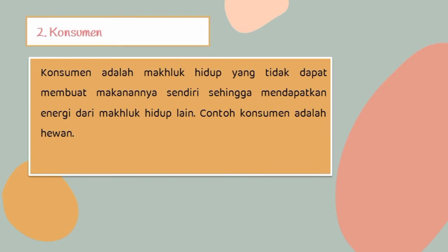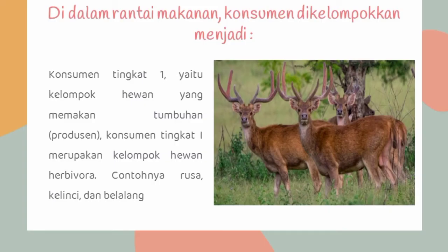Konsumen adalah makhluk hidup yang tidak dapat membuat makanan sendiri, sehingga mendapatkan energi dari makhluk hidup lain. Contohnya adalah hewan. Di dalam rantai makanan, konsumen dikelompokkan menjadi konsumen tingkat 1, yaitu kelompok hewan yang memakan tumbuhan atau produsen. Konsumen tingkat 1 merupakan kelompok hewan herbivora. Contohnya rusa, kelinci, dan belalang.